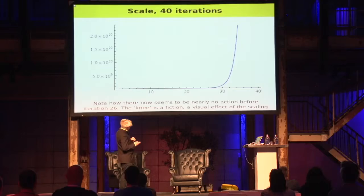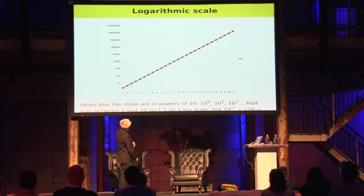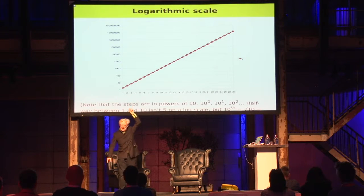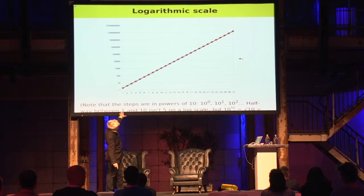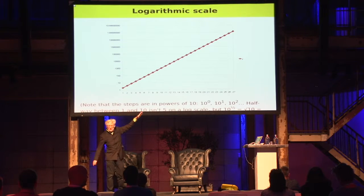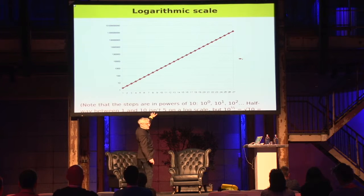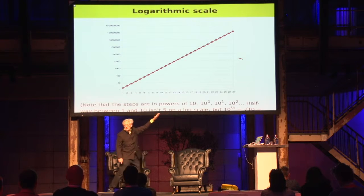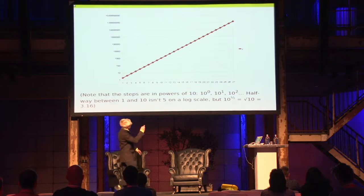What you should really do is use a logarithmic scale, where instead of going 1, 2, 3, 4, 5... you go up in steps of 10 — multiples of 10. Then you get a straight line, which shows you there is no knee. It really is just a straight line.